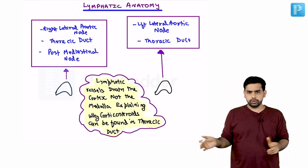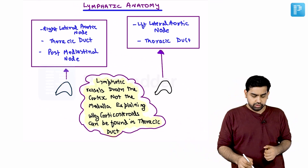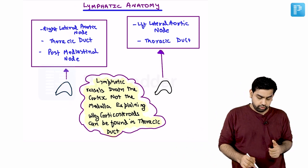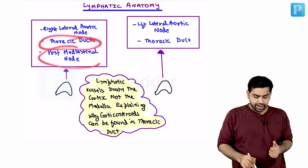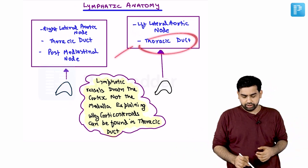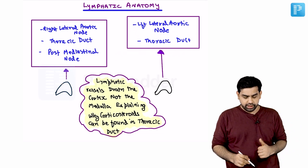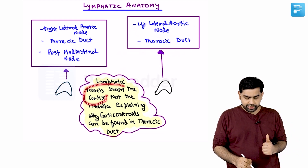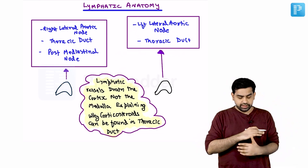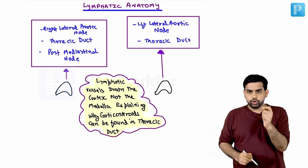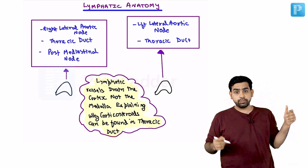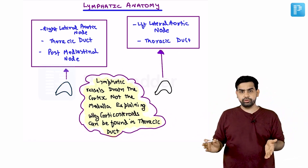The lymphatic anatomy is more or less similar to that of the kidney. On the right, lymphatics go to the right lateral aortic nodes, but can also enter directly into the thoracic duct and the posterior mediastinal nodes. On the left, they go to the left lateral aortic nodes and the thoracic duct. Importantly, the lymphatic vessels drain only the cortex — they are not draining the medulla. That is why we do not find catecholamines in the thoracic duct.